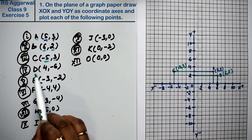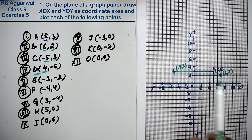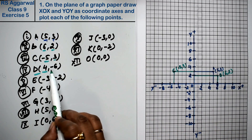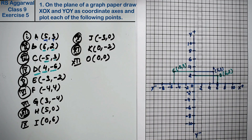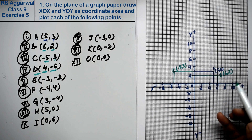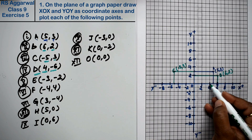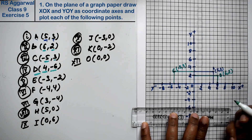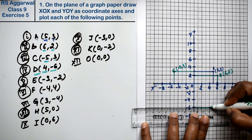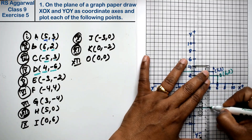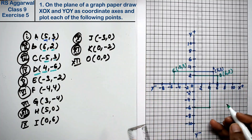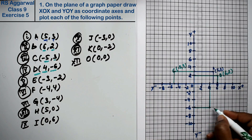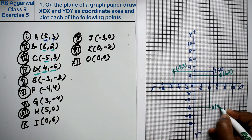Next, point D: x is positive 4 and y is minus 6. Y minus is on the lower side. So x=4 is here, and y = minus 6 is below. We extend from x=4 down to y=-6. This is point D at (4, -6).